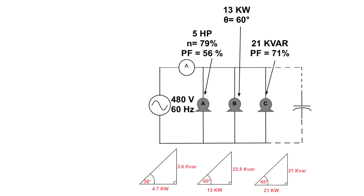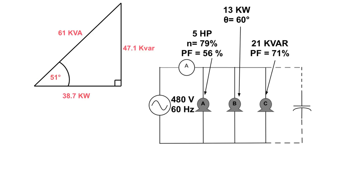Then, I'm going to work out my overall kVA. Boom! There you go. I went 4.7 plus 13 plus 21 gives me 38.7 kilowatts. I went 3.6 plus 22.5 plus 21 gave me 47.1 kVAR. Using the power of Pythagoras, this squared plus this squared gives the square root of that. That's 61 kVA. With that now, I worked out that my angle is 51 degrees. Just using you can use sine, cosine, tangent, whatever you want.